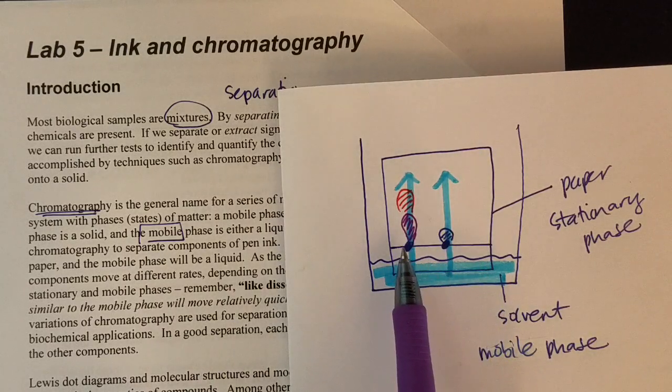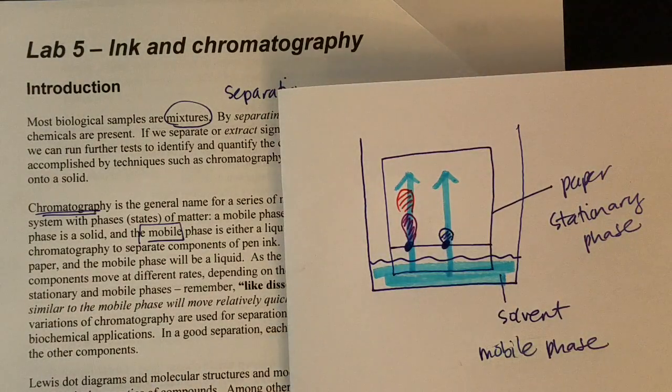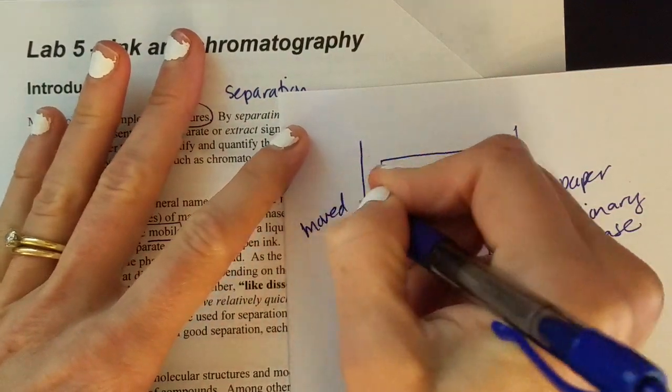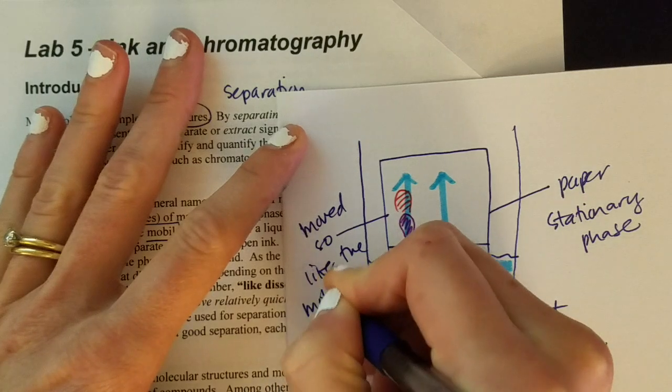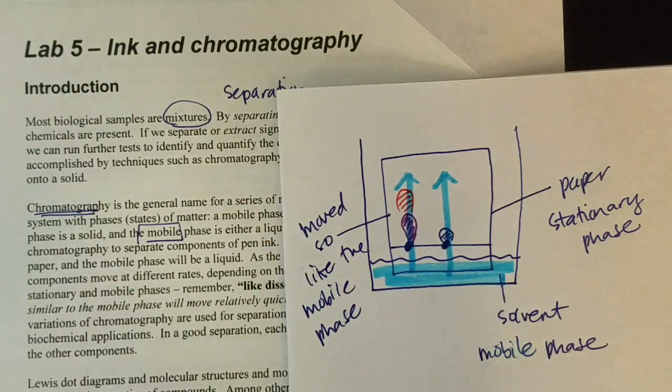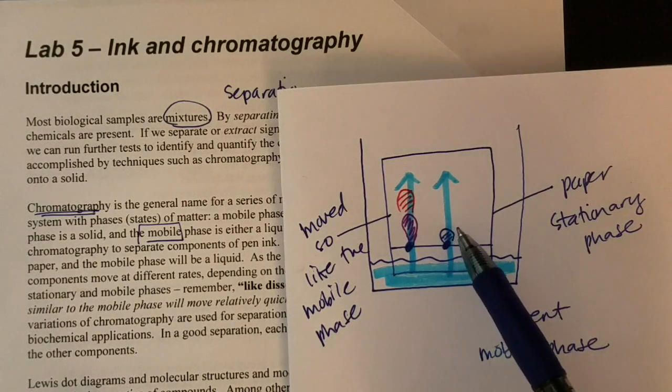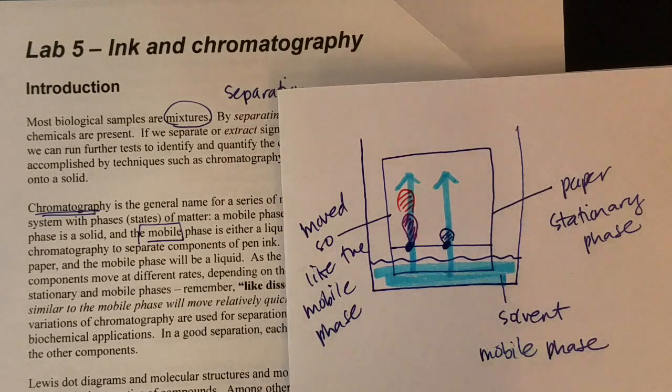In this case, I would say that these inks over here, the ones on the left, they moved and so they are like the mobile phase because like dissolves like. Over here, these inks did not move and so we would say that they are more like the stationary phase or the staying still phase.